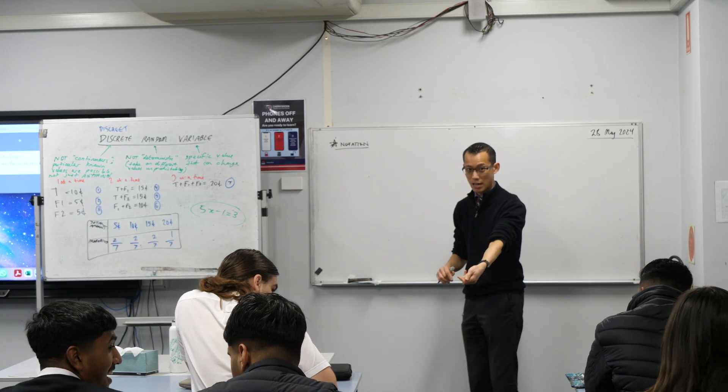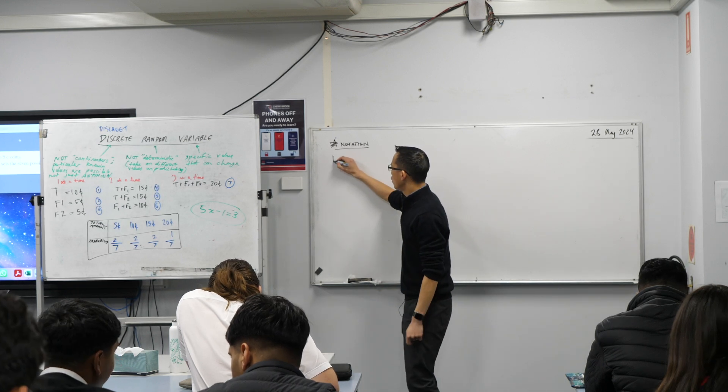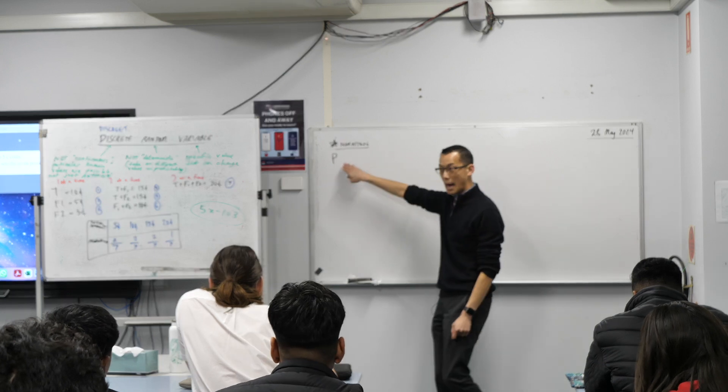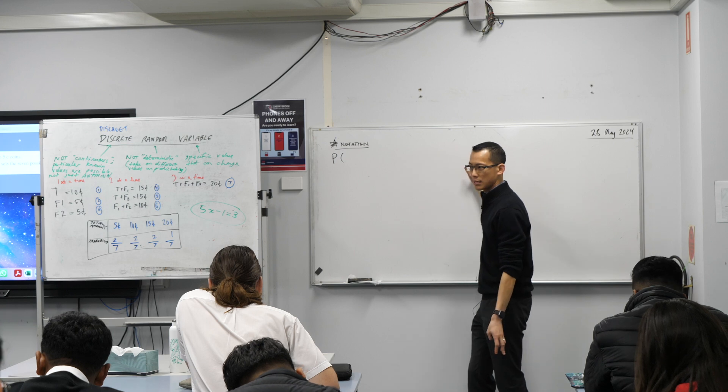It's important that we know how to describe these discrete random variables, and what we're going to do is, remember I said we're still in the same sphere of probability, right? We're going to borrow some notation from that and just tweak it just a little bit. So normally, when we say the probability of something, we would use the capital P, and then in brackets, we would put what's the thing that's happening.